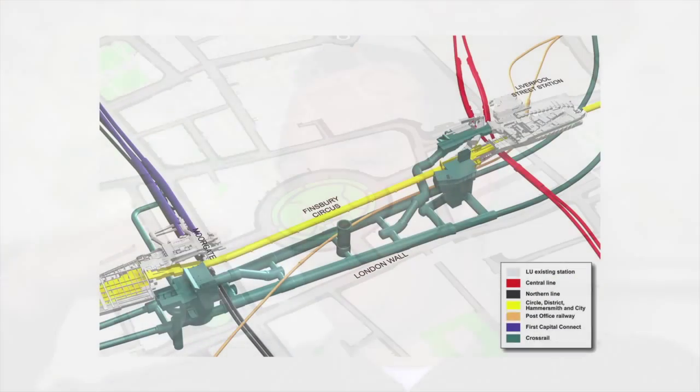Crossrail is basically the London Tube, and it's just an expansion. They're literally going underneath the existing rail lines. Here's London, here's where the existing train lines are — they're going beneath that, deeper, to build these faster tunnels. So it's another bit of data under some very old buildings.